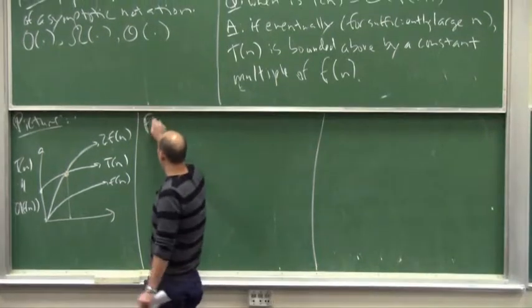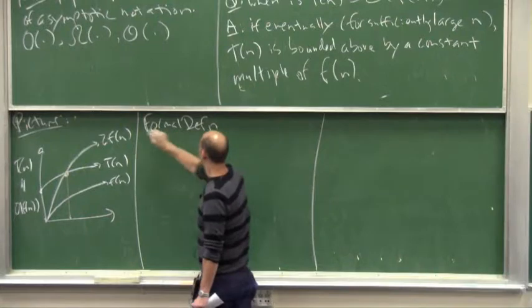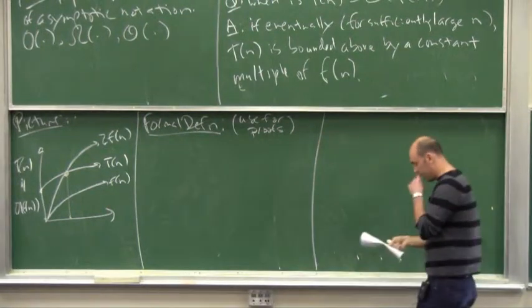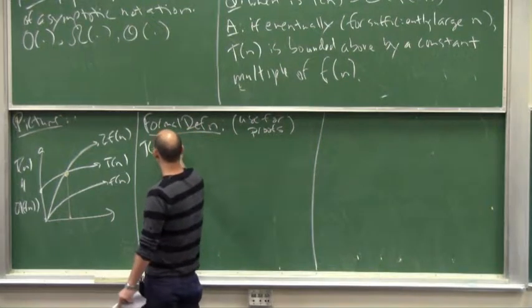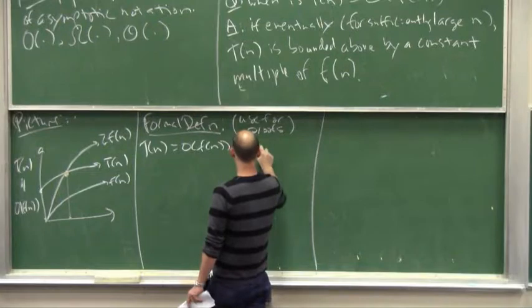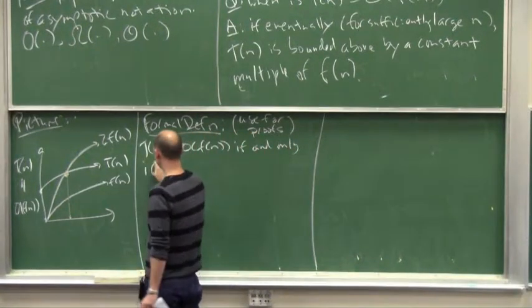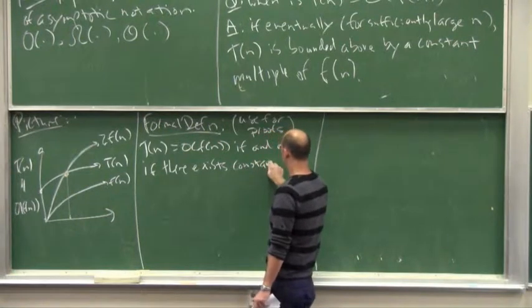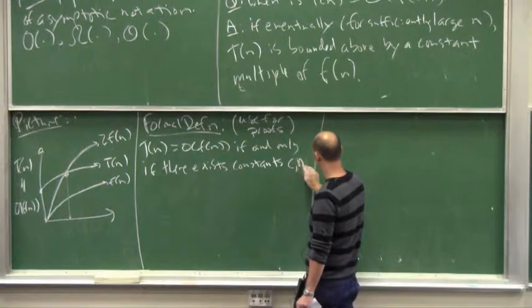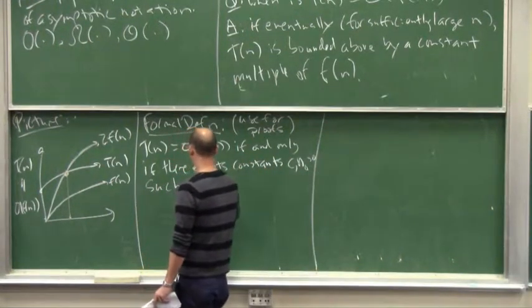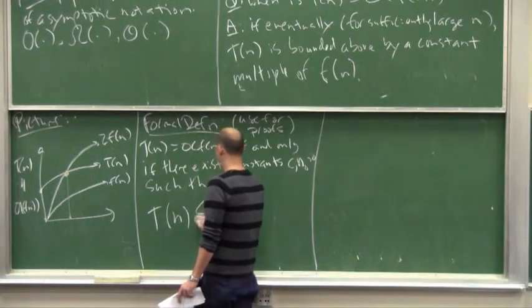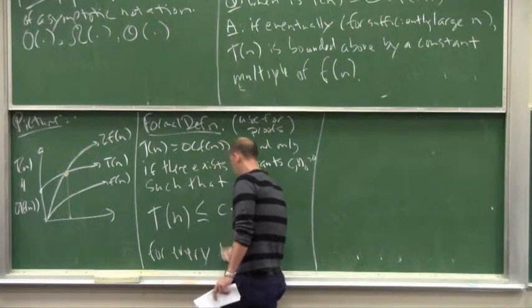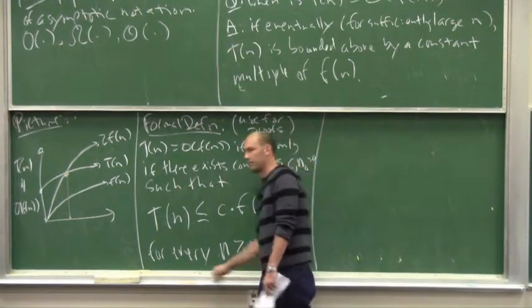Okay, let me give you a formal definition. And this is the one that I want you to use for proofs. But really, it's just encoding in mathematics what we've already said in English. Definition: One function is Big O of another if and only if there exists constants, we'll call them C and n₀, positive, such that T(n) is bounded above by C times F(n) for every n greater than or equal to n₀.